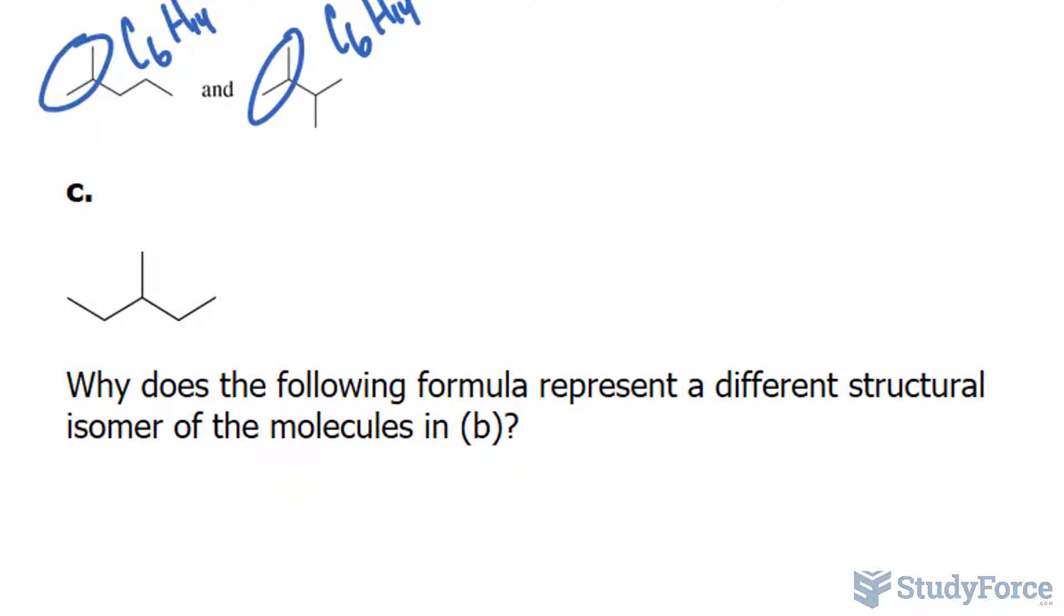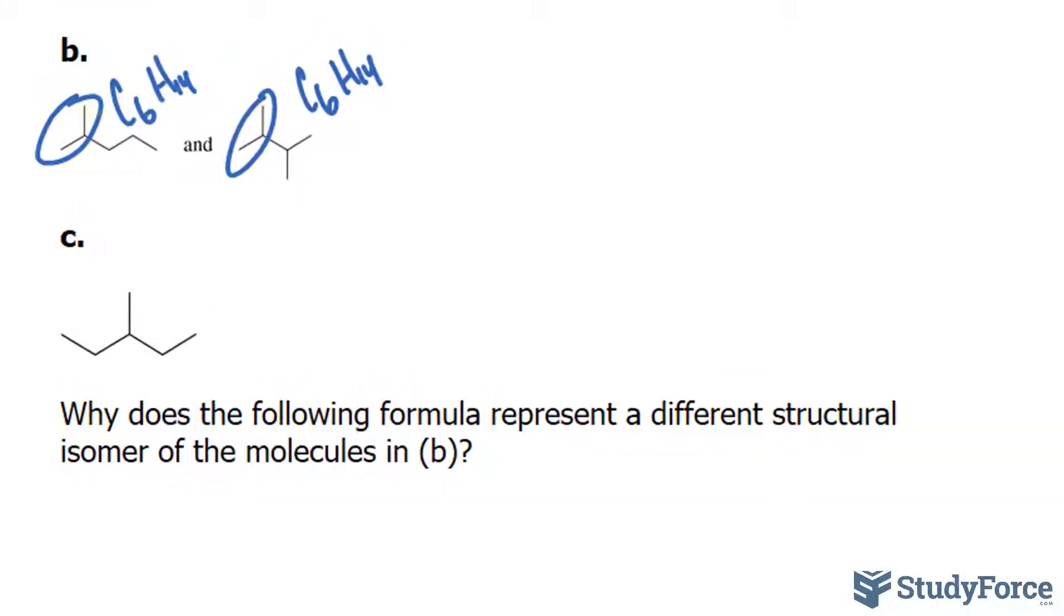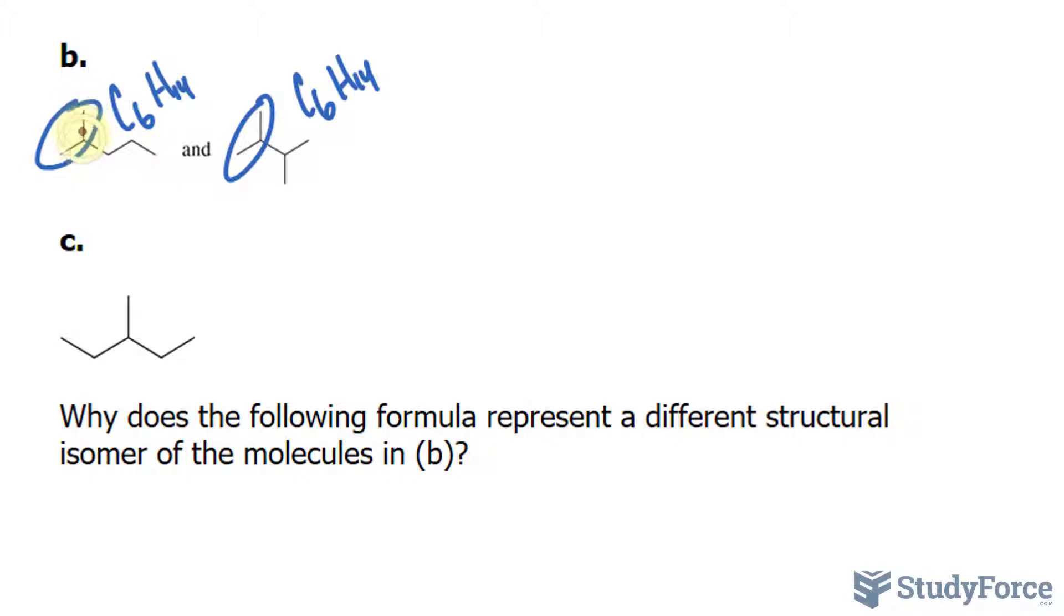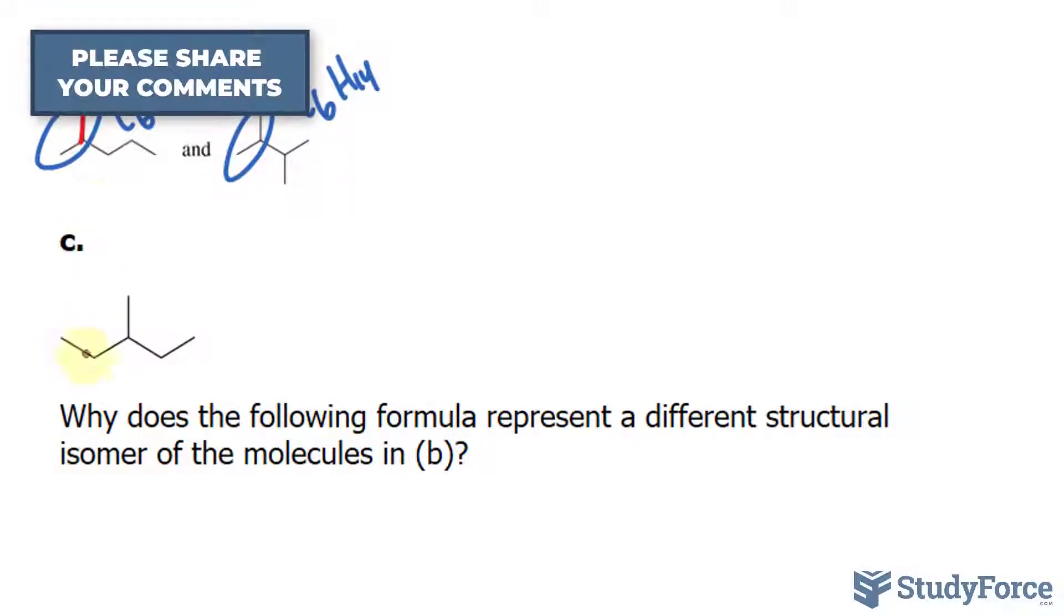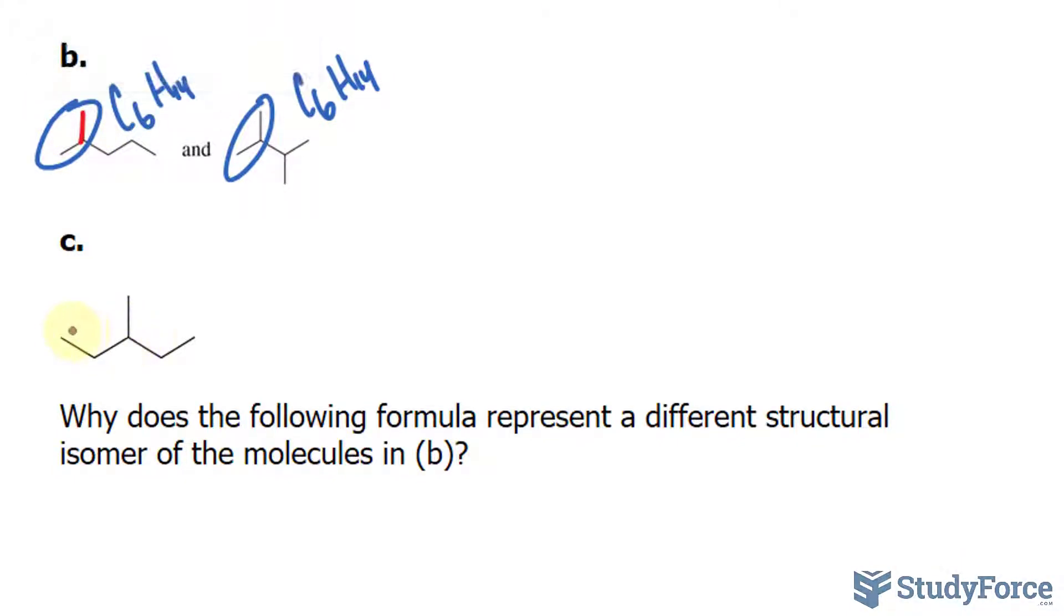And finally, why does the following formula present a different structural isomer of the molecule in B? I think this one's obvious. You see how this carbon branched out after the second carbon? Well this time, that carbon, that methyl group, branches on the 1, 2, 3, 3rd carbon.